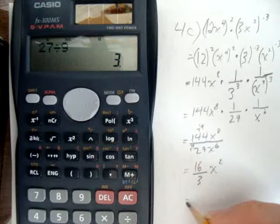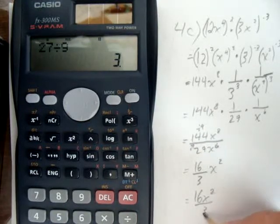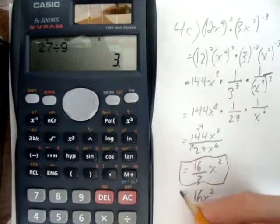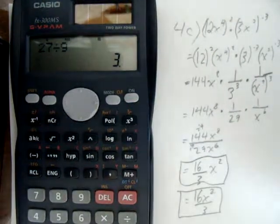So my answer is 16 over 3 x squared or you can write it as 16 x squared over 3, they're equivalent. Both would be perfectly acceptable answers.